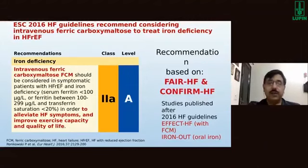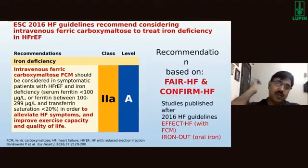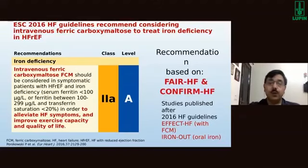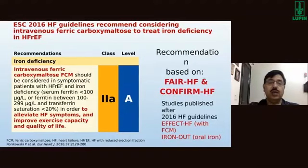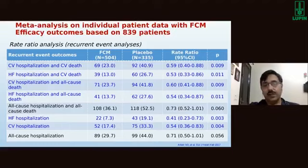Two large trials — FAIR-HF and CONFIRM-HF — showed that treating these patients with intravenous iron improves outcomes. After the 2016 guidelines, two more studies came about: EFFECT-HF with ferric carboxymaltose and IRON-OUT with oral iron. A meta-analysis of individual patient data from ferric carboxymaltose studies is also available.